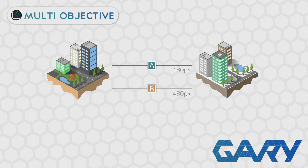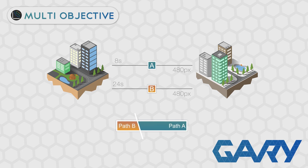Let's repeat this process only considering trip time. We are going to ignore all acceleration and just assume our car is always going the speed limit. From this we can work out that path A takes 8 seconds and path B takes 24 seconds. So based on time, path A is three times as good as path B — therefore path A would be three times as fit, with a 75% chance of being selected as a parent and path B a 25% chance.